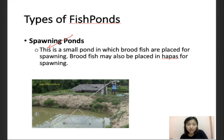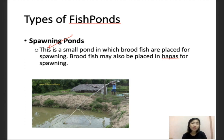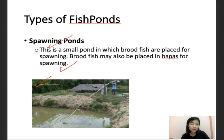Moving on to spawning ponds. These are ponds used for spawning and are a bit bigger than the hatching ponds but smaller than other ponds — of average or small to medium size. These are the ponds where brood fishes are placed for spawning. The brood fishes can also be placed in hapas for spawning, just as hapas are used for hatching.